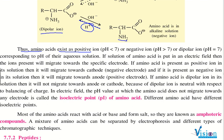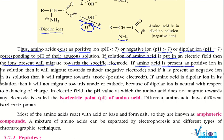When pH is greater than 7, the amino acid basically exists as a negative ion, and when pH is equal to 7, it is a dipolar ion. Now if a solution of amino acid is put into an electric field, the ion present will migrate towards the electrode. If it is a positive ion, it migrates towards the cathode; if it is a negative ion, it moves towards the anode. If the amino acid is a dipolar zwitterion, it remains in solution and does not migrate towards any electrode, because the dipolar ion is neutral with balanced charge.